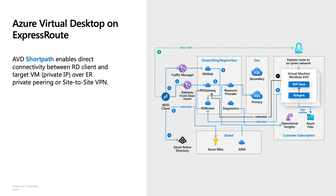Now I want to talk about new scenarios and new designs. The first one is Azure Virtual Desktop, formerly known as Windows Virtual Desktop. A common question we receive is: does ExpressRoute support Azure Virtual Desktop? Let's look at the AVD architecture. AVD is built on top of Azure PaaS services. At the center of this architecture is RD Gateway — Remote Desktop Gateway — a multi-tenant service that facilitates communication between the client and the VMs over the public Internet, because RD Gateway has public IPs.